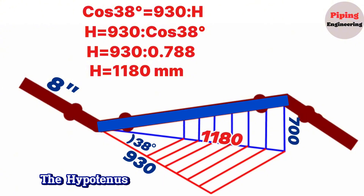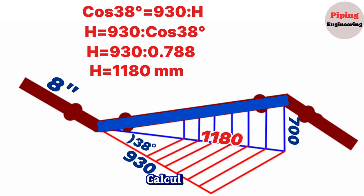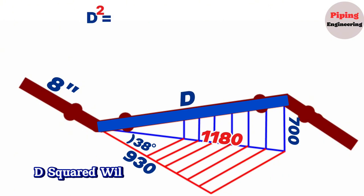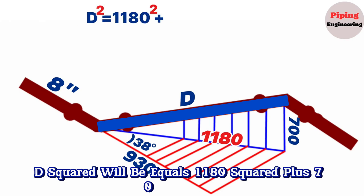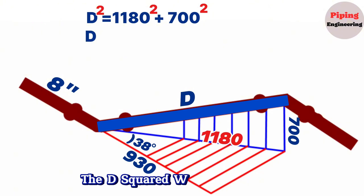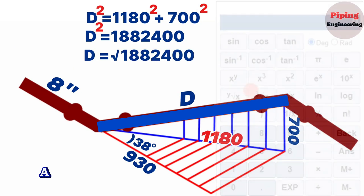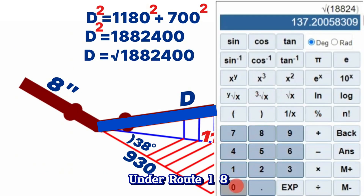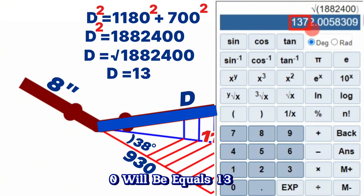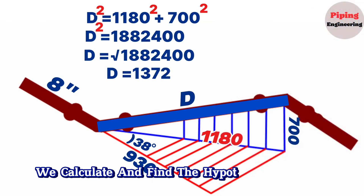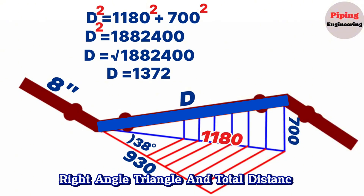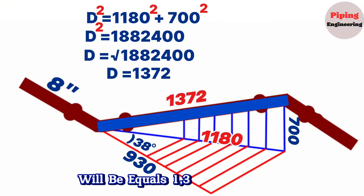Now let's find the hypotenuse of the vertical right triangle. We will use the Pythagorean theorem formula to calculate this hypotenuse. If we mark the hypotenuse with letter D, according to the Pythagorean theorem, D squared equals 1180 squared plus 700 squared. Continued to calculate, D squared equals 1,882,400. So D equals the square root of 1,882,400. Using a scientific calculator, the square root of 1,882,400 equals 1372. So the hypotenuse of the vertical right-angle triangle and the total center-to-center distance of the elbows equals 1372mm.